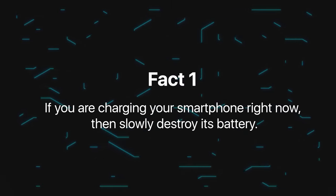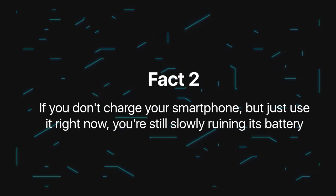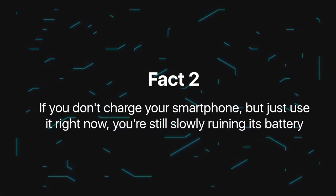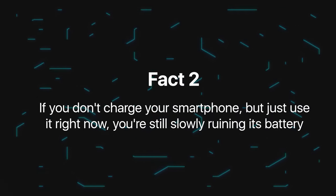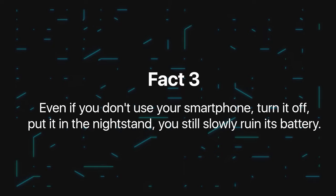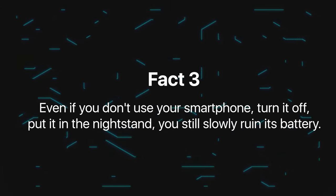To begin with, there are three unpleasant facts. The first one, if you're charging your smartphone right now, then you're slowly destroying its battery. But don't rush to take out the charger, because fact number two. If you don't charge your smartphone, but just use it right now, you're still slowly ruining the battery. And my favorite fact number three. Even if you don't use your smartphone, turn it off, put it in the nightstand, you're still slowly ruining the battery.